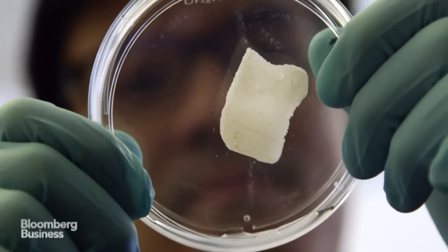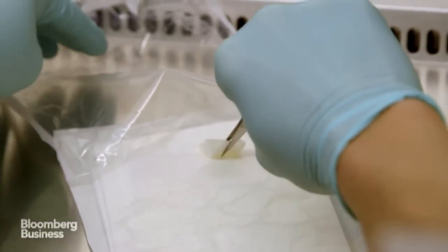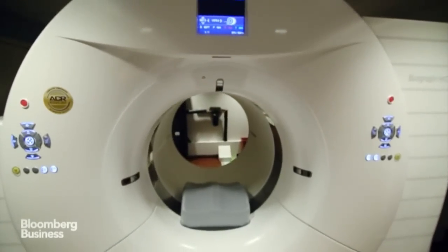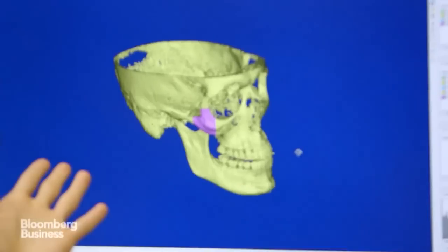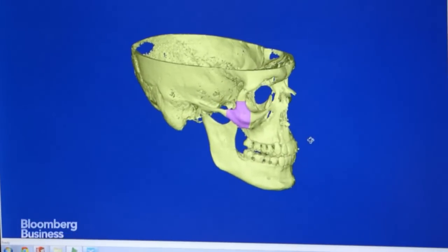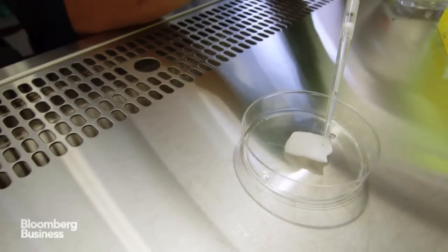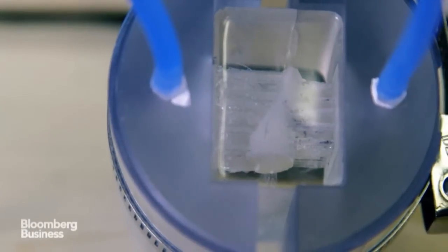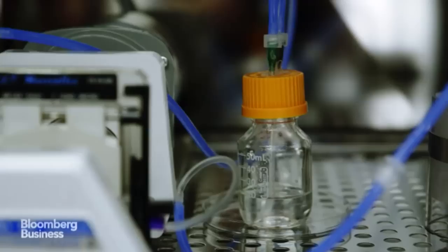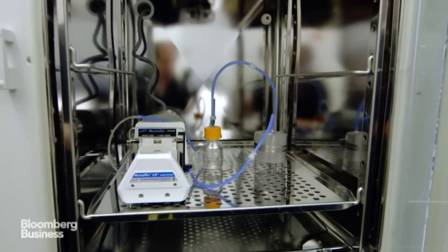Before that cow bone or scaffold can be infused with the patient's own stem cells, it needs to be the right size and shape. For that, Epibone takes a CT scan of the patient to get a 3D model of where the bone will wind up. The donor bone is then milled into shape and stem cells are added to it. The bone and the stem cells grow together inside a specially made container called a bioreactor, which is basically a jumbo petri dish that can mimic the conditions found in the human body.